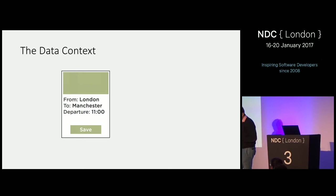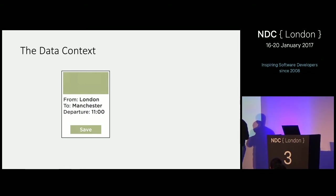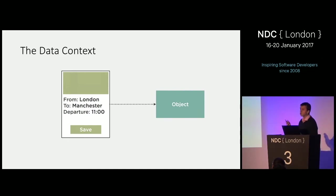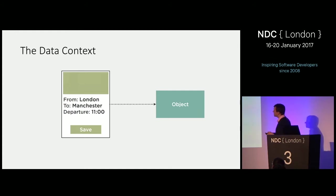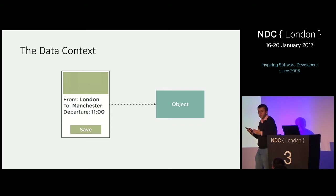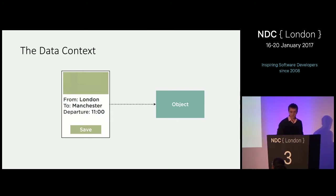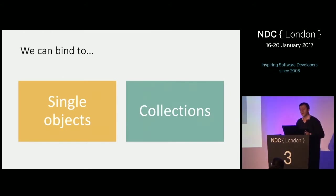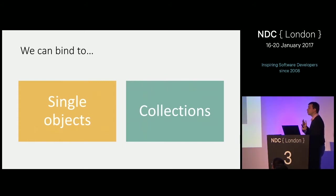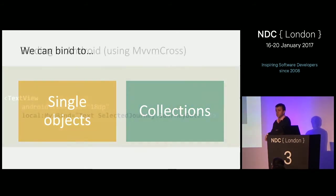In many applications, we'll have screens with a lot of fields all binding to the same source. In that case, we talk about the data context. We set the entire screen linked to one source object, and then all fields within can bind to that single object — that object is referred to as the data context. We can bind to single objects, like the journey details screen, or to a list, like the search results screen. Data binding supports both single objects and collections.